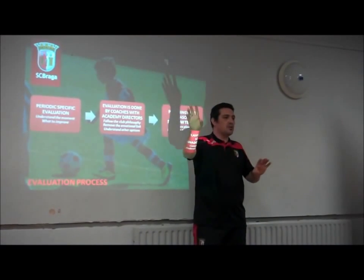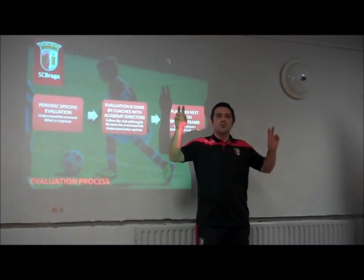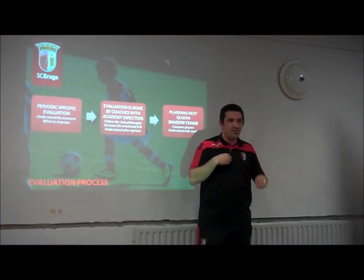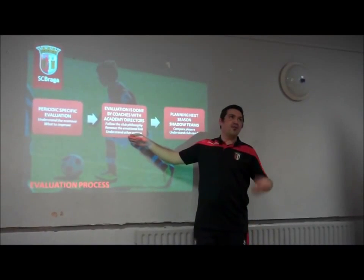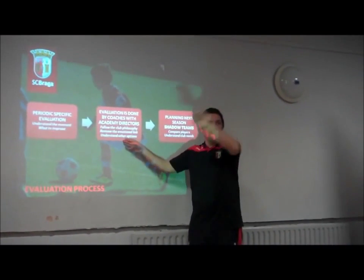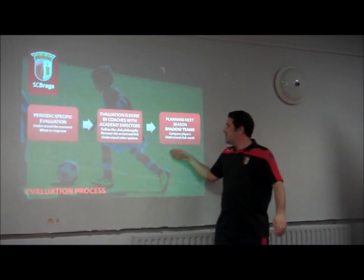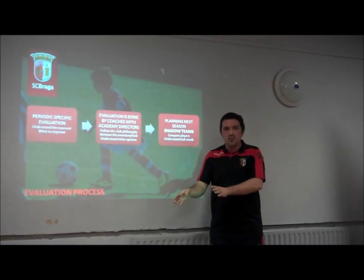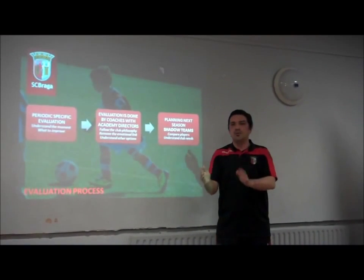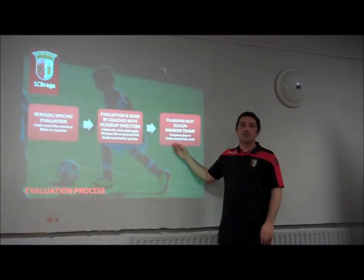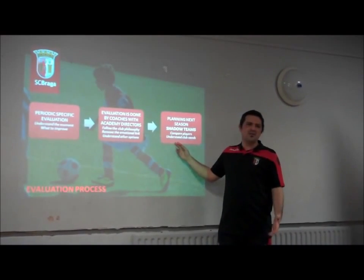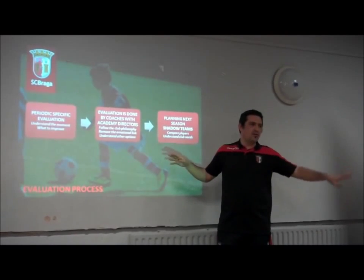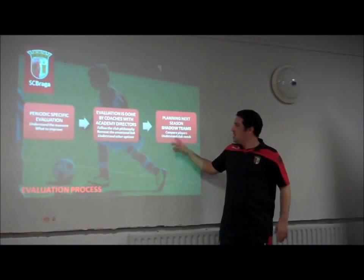We start planning according to the evaluation. In December we know where we are fragile. I send that report to scouting and they search for players with those characteristics to see if they are better than the ones we have. In March we evaluate ours and invite external candidates. At the end of the season, if we have to let someone go we do it as late as possible, but if we have a genuinely better player we keep them — same level, we don't throw away our own work.